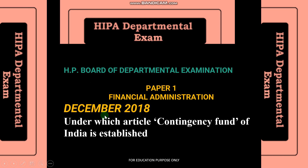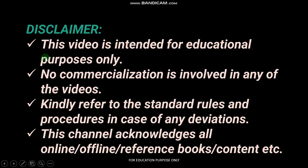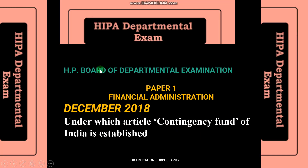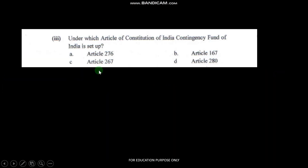The question was: under which article of the Constitution of India is the Contingency Fund of India established? This is for educational purposes only; there is no commercialization involved. Four options were given: Article 276, Article 167, Article 267, and Article 280.